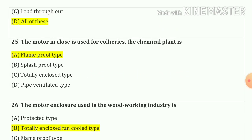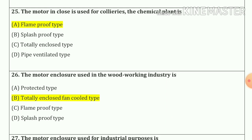Question number twenty-five: The motor enclosure used for a chemical plant is option A — flame proof type.